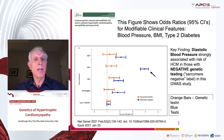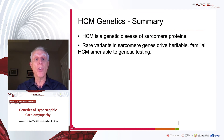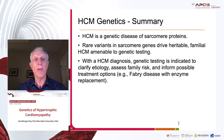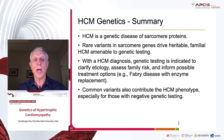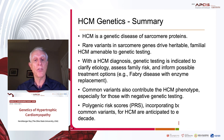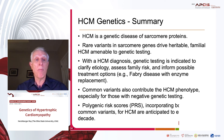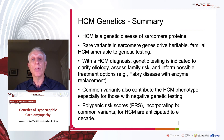To summarize: HCM is a genetic disease of sarcomere proteins. Rare variants of sarcomere genes drive heritable familial HCM, which is amenable to testing. With an HCM diagnosis, genetic testing is indicated to clarify etiology, assess family risk, and inform possible treatment options. Common variants also contribute to HCM phenotype, especially for those with negative genetic testing. I suspect we'll have polygenic risk scores incorporating common and rare variants for HCM to emerge probably this decade. I'd like to thank the organizers for the opportunity to present.